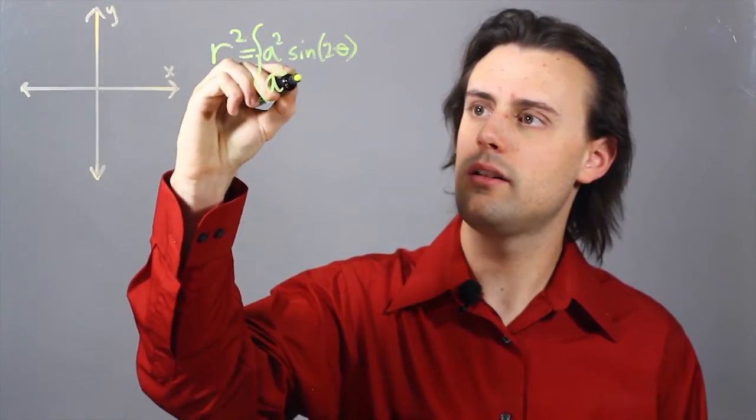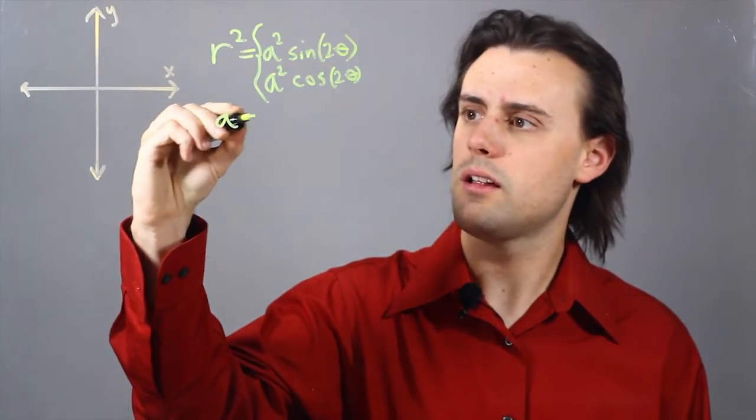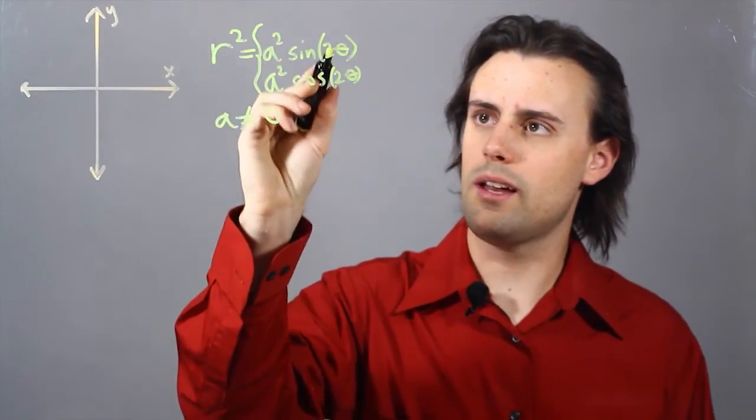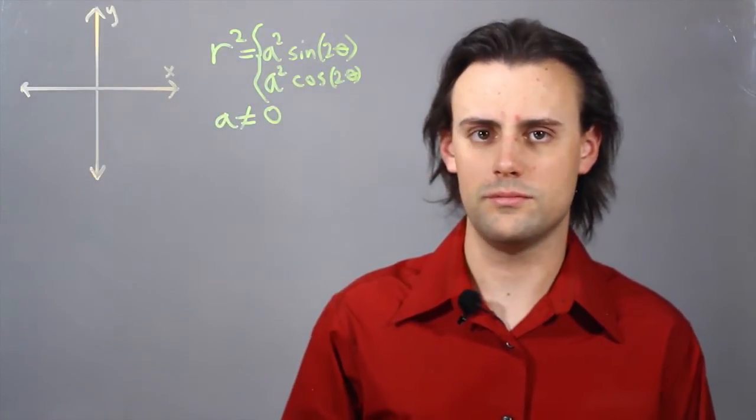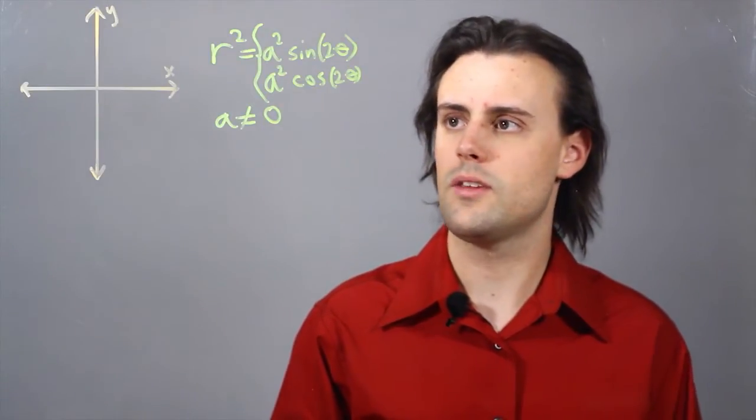where a is not allowed to be 0. And this 2 indicates a frequency of 2 when you go from 0 to 2 pi radians.